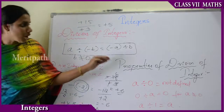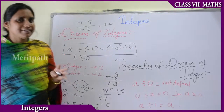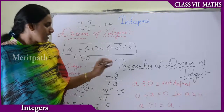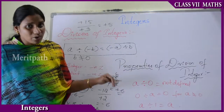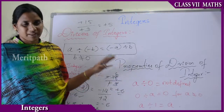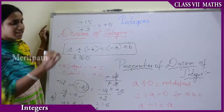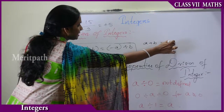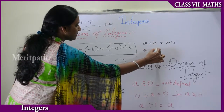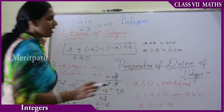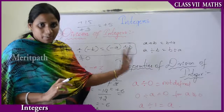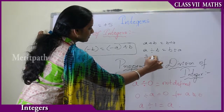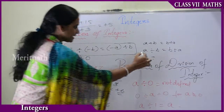Now let us see the important properties of division of integers. The commutative property does not hold for division of whole numbers, and in the same way it does not hold for integers either. That is, A divided by B does not equal B divided by A.